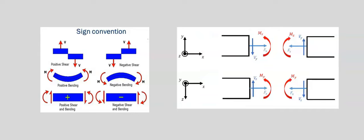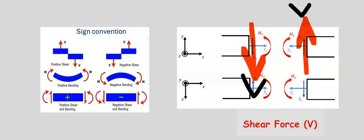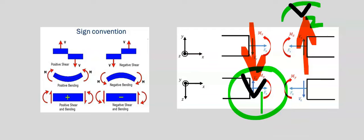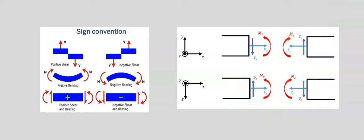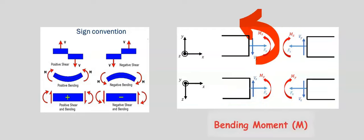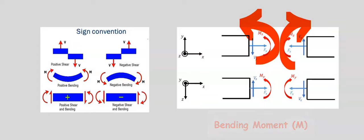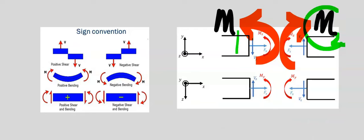Besides axial forces, shear force produces shear stresses, represented as V, where V1 is the same thing as V2. Subsequently, bending moment produces normal stress. The pair M1 and M2 are equal.